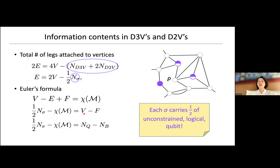Why is this interesting? Each vertex has a qubit and each face has a stabilizer. The right-hand side is the difference between total information in the system — from qubits — and the constraints. When the two match, there is no dynamical degree of freedom left. But when they don't match, n_σ amounts to half the remaining information: each sigma carries half an unconstrained logical qubit. This tells us that having n_σ non-zero is the way to have topological qubits.